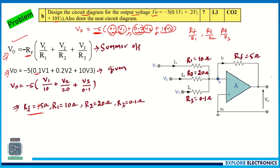Comparing with the standard summer expression, Rf = 5 ohm. From 1/R1 = 0.1, R1 = 10 ohm; from 1/R2 = 0.2, R2 = 5 ohm; from 1/R3 = 10, R3 = 0.1 ohm. We draw the circuit with V1, V2, V3 at the inverting terminal using R1=10Ω, R2=5Ω, R3=0.1Ω, and feedback Rf=5Ω. The inverting input is used because the output has a minus sign.